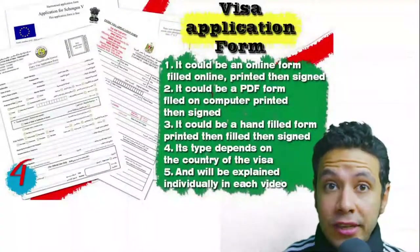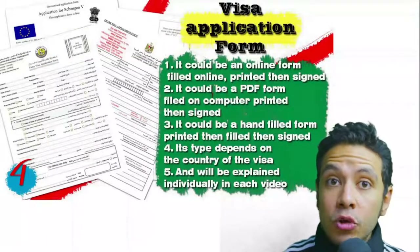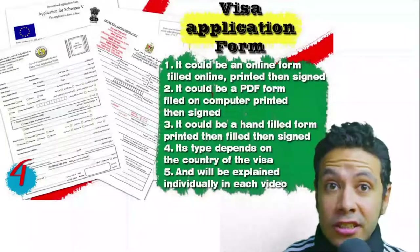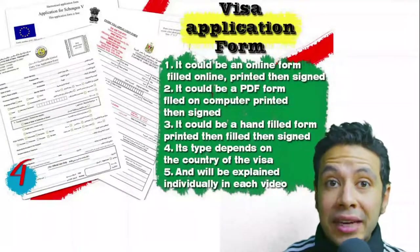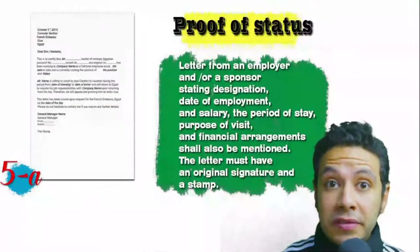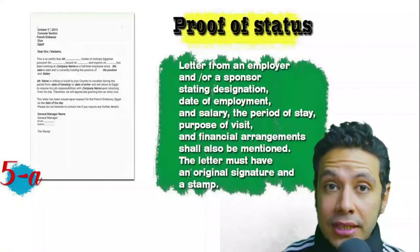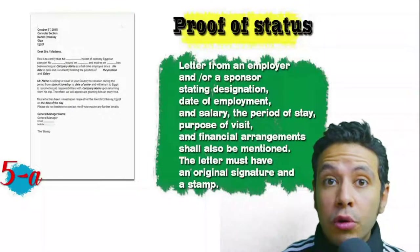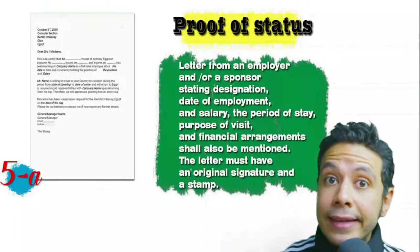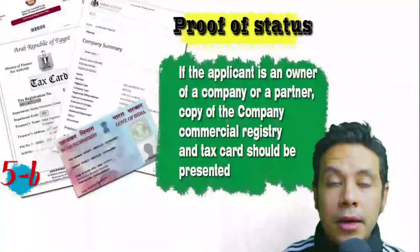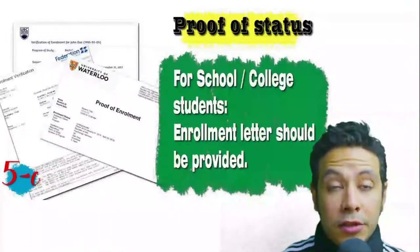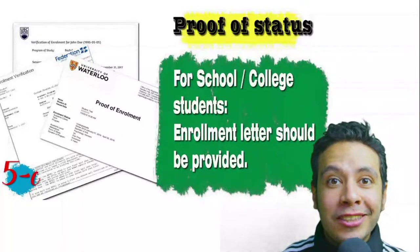For the visa application form, you generally need one copy, but sometimes two or three are required. Forms differ by country — in general, print and fill manually, though many countries now offer an online platform to fill and then print and sign. For proof of status: if you are an employee, provide a letter from your employer or HR department mentioning your name, work details, salary, address, and contact numbers, with an original signature and stamp. Business owners must present their commercial registry and tax card. Students must provide an enrollment letter from their university or school.